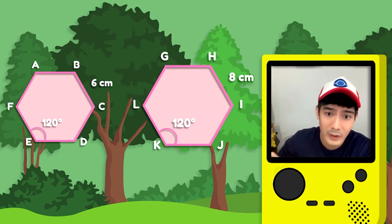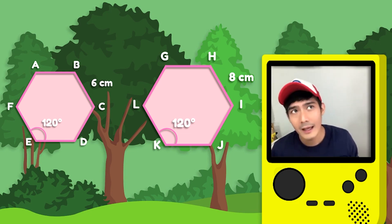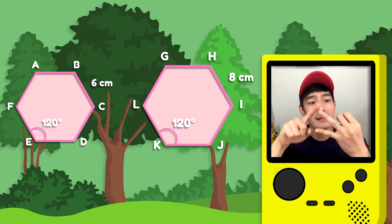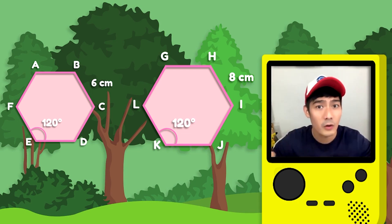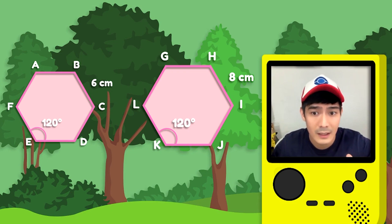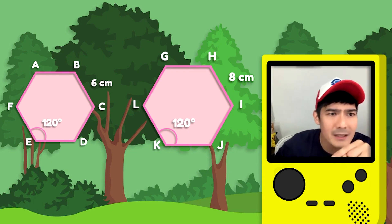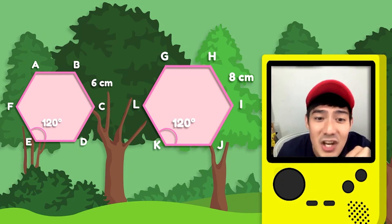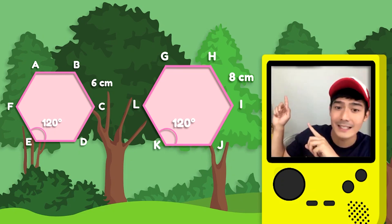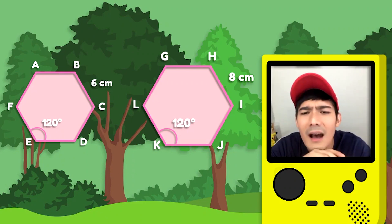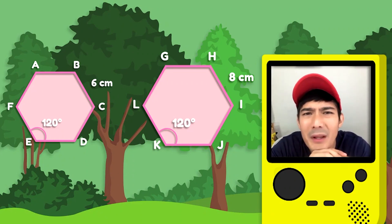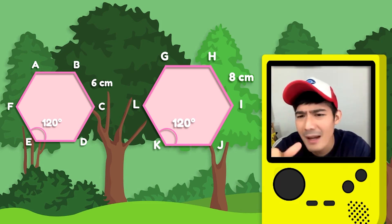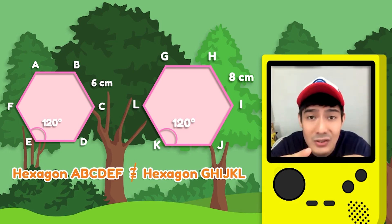When we label this polygon, pwede nating sabihin hexagon A, B, C, D, E, F. Corresponding to the sides — itong hexagon ABCDEF ay may 6 centimeters, habang ang hexagon G, H, I, J, K, L ay may 8 centimeters. Magkaparehong 120 degrees yung angles nila pero magkaiba yung sukat ng kanilang sides. Ano sa tingin ninyo — congruent ba sila? Good job — tama, hindi sila congruent polygons. Tandaan: masasabi lang nating congruent polygons ang isa't isa kung magkaparehong magkapareho ang kanilang itsura at sukat.